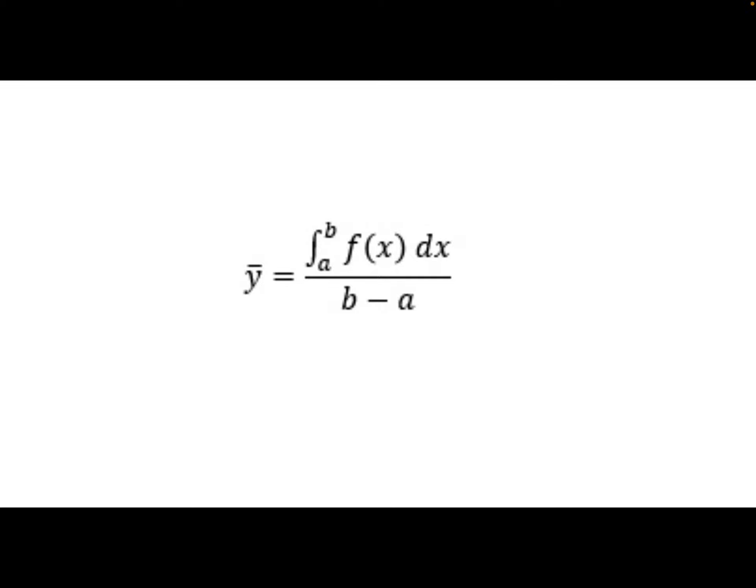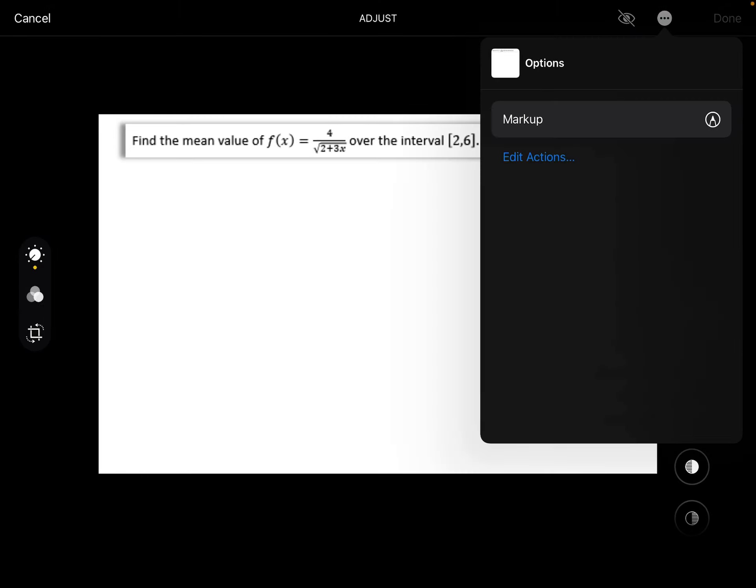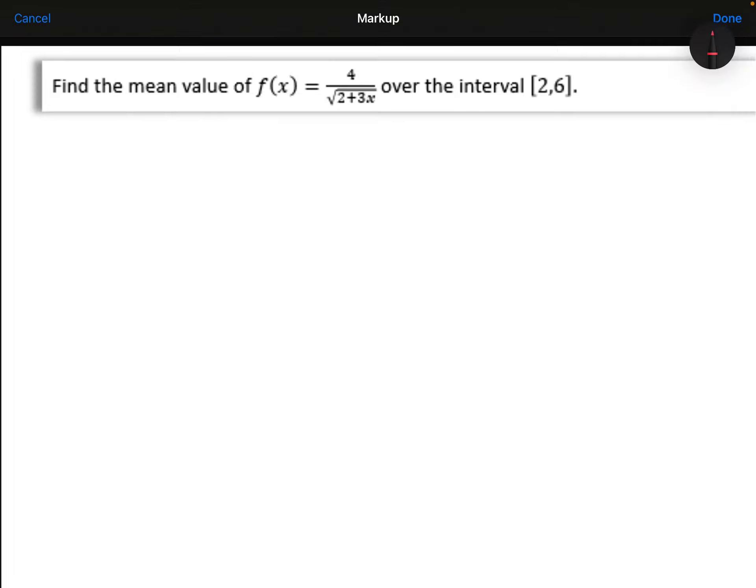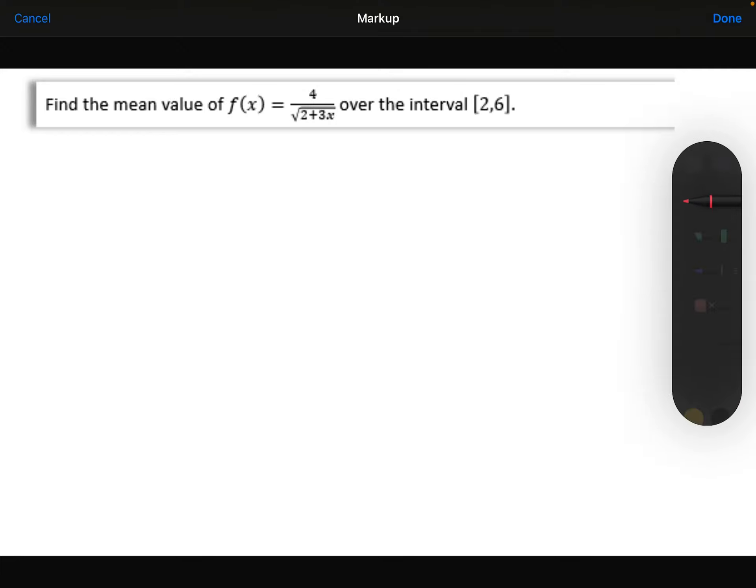So let's apply that to a couple of examples. So, first example. We want to find the mean value of f(x) equals 4 over root 2 plus 3x over the interval from 2 up to 6.